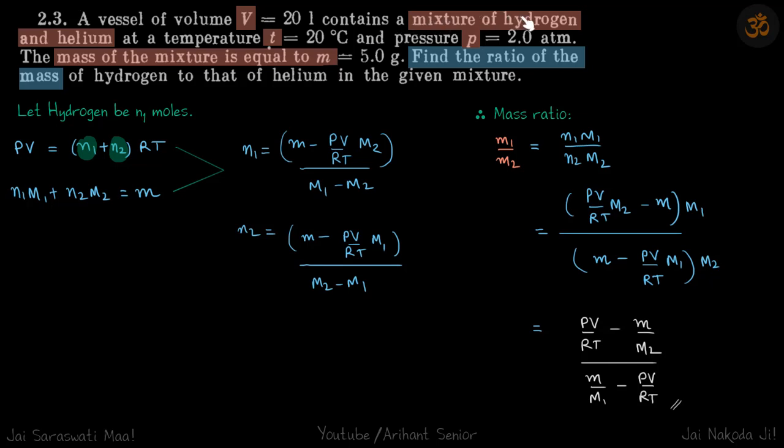We are given a mixture of hydrogen and helium and all the properties of this mixture are given. We need to find the ratio of the mass of hydrogen to helium.